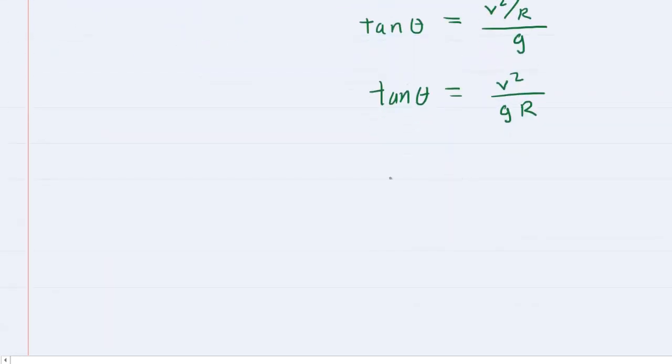Finally, to solve for the angle, take the inverse tangent on both sides. The tangent cancels, and the right side is inverse tangent of v² over gR.